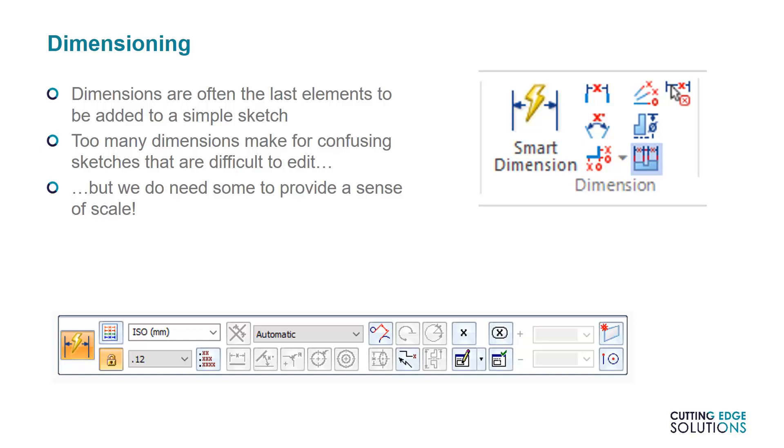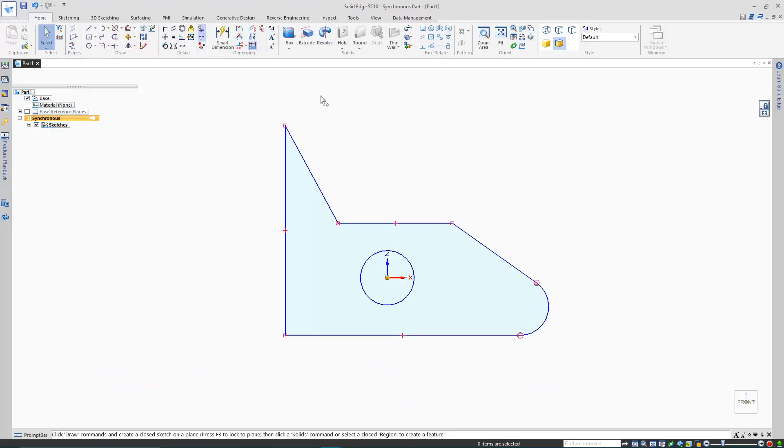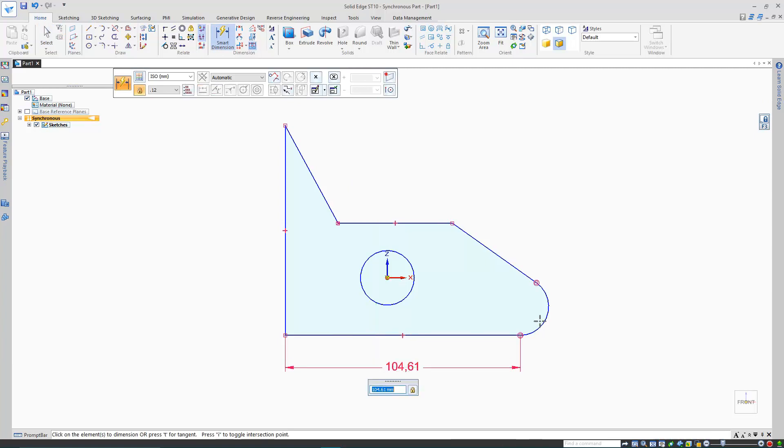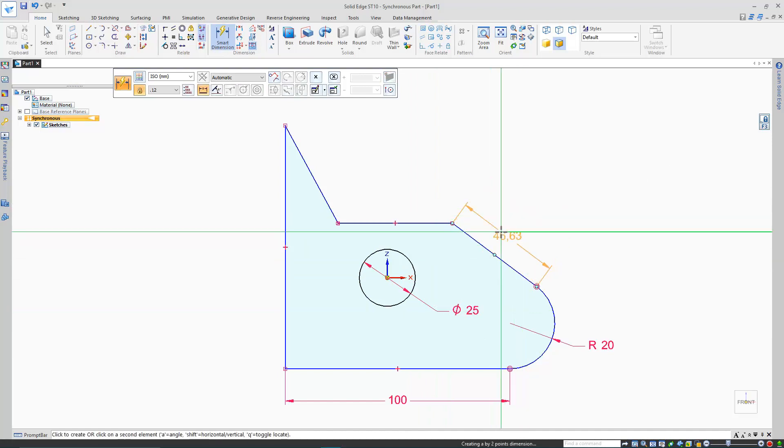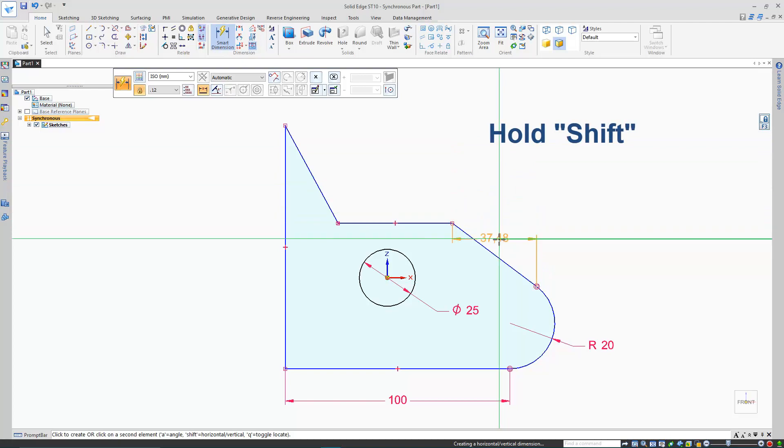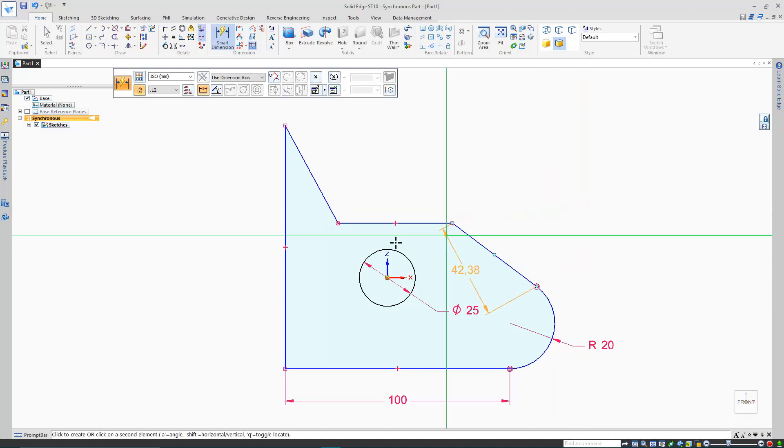Dimensions themselves are fairly straightforward. When placed on a sketch, they provide a sense of scale and distance between elements or key points. If the dimension orientation with smart dimension is wrong, then it's possible to hold down SHIFT and reorient the preview of the dimension. And if a dimension taken along a different axis is required, you can use dimension by two points. Or alternatively, change the dimension mode from automatic to dimension axis, which will allow a new reference axis to be defined.